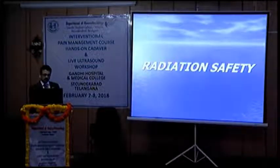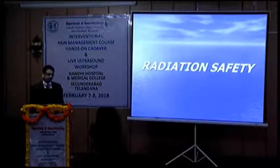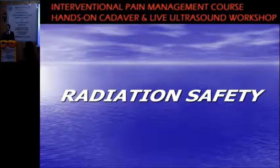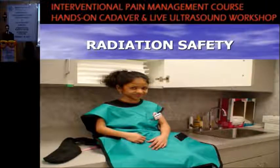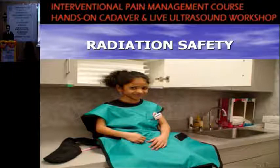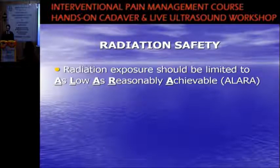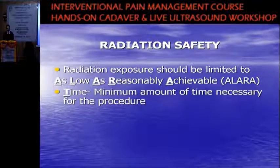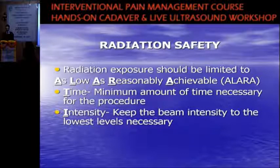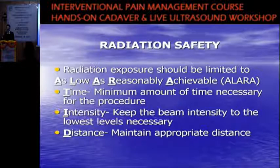To keep ourselves and patients safe from radiation, we apply the principle called ALARA — as low as reasonably achievable. This involves four key elements: Time — keep fluoroscopy time to the minimum necessary for the procedure. Intensity — keep the beam intensity to the lowest levels necessary. Distance — maintain appropriate distance, as radiation exposure is inversely proportional to distance. And shielding — use appropriate protective shields where possible.